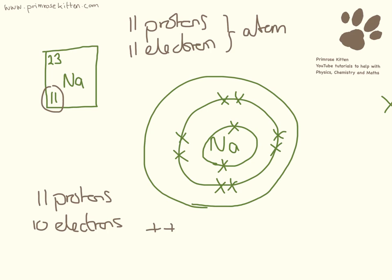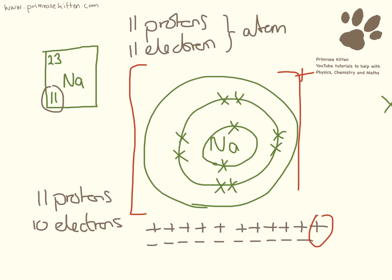So if we count 11 positive charges and 10 negative charges, you can see that we have this positive charge here. Now, we have to draw this on here. We say this has a positive charge, and then to show that it's an ion, we've put some nice square brackets around it. So an ion of sodium has 10 electrons, because it's lost one, and it has a positive charge.